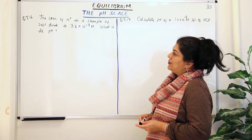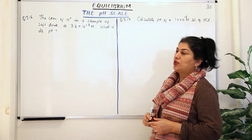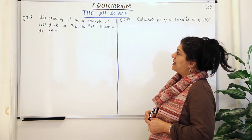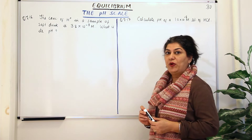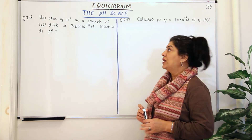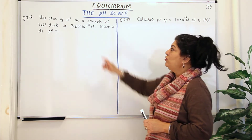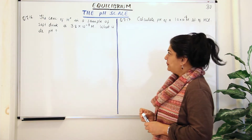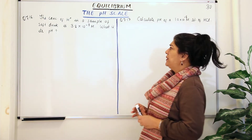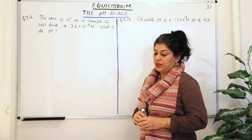The question reads that the concentration of H⁺ in a sample of soft drink is 3.8 × 10⁻³ moles per liter — capital M means molarity in moles per liter. What is its pH?